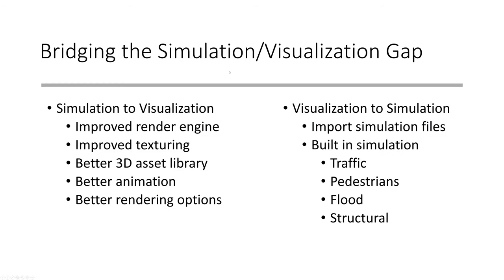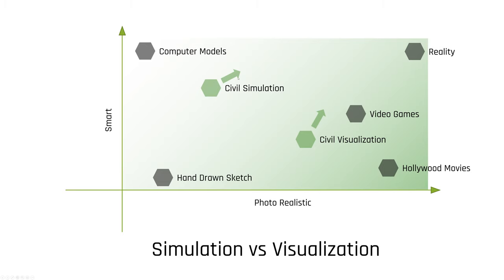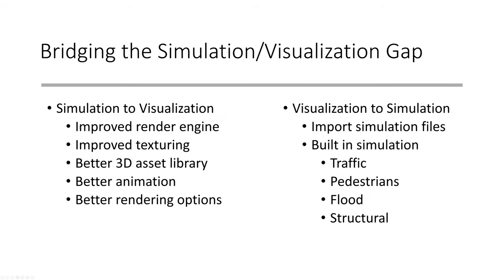To bridge the gap — simulation moving toward visualization: you can improve the render engine, improve texturing, and get more artists involved in the process. With a civil engineering background, CivilFX's product got a lot better once they introduced artists trained in lighting, texturing, bump maps, and 3D asset libraries. Better animation matters too — in traffic simulation, cars can look jerky as they turn, which is distracting for visualization purposes. Better rendering options also help, whether that's resolution choices or camera abilities within the software.